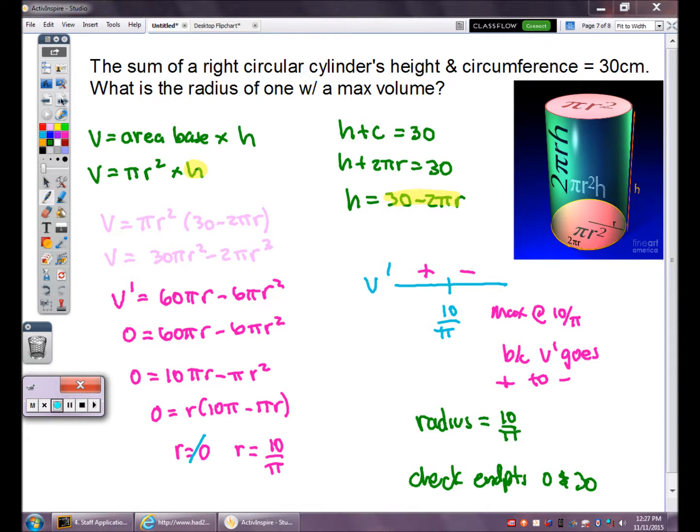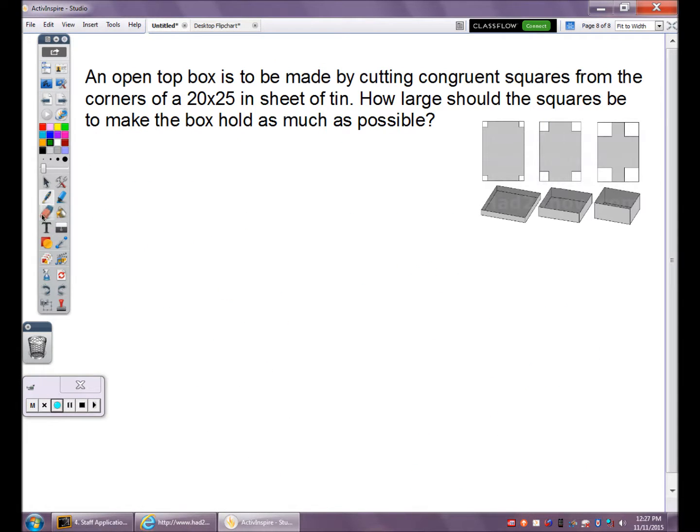Next question. This was a very common question. You see this come up a lot in calculus. The open top box question made out of a sheet of paper or a piece of tin, where you're cutting corners out of the sheet of paper and you're going to fold them up and make a box out of it. You can probably Google or YouTube this concept. Here's the setup. I'm cutting congruent squares from corners of a 20 by 25 sheet of tin. How big should those squares be?